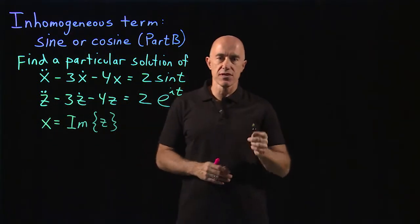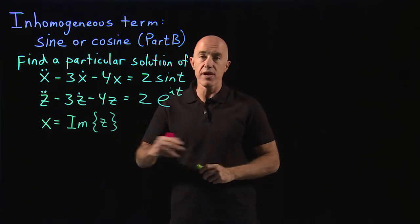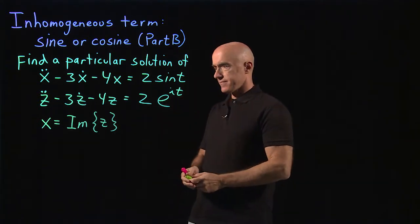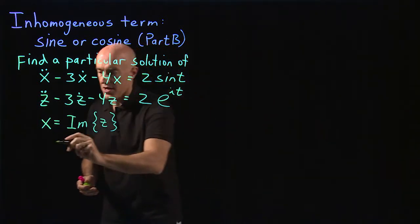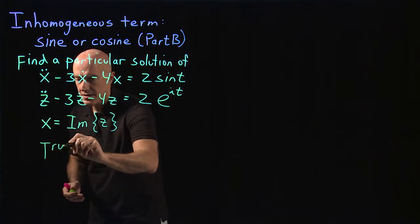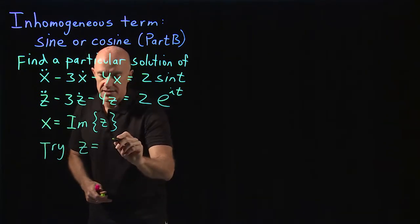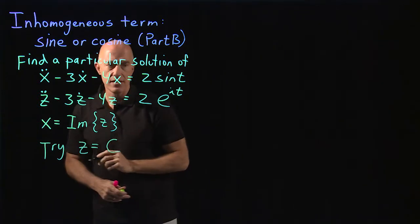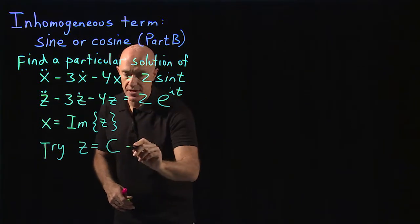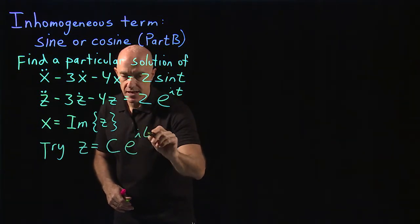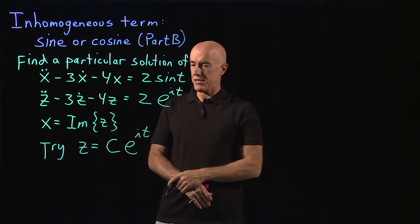If the right hand side was a cosine t, then we would be looking for the real part of z. Okay, so we try now our exponential ansatz. So we try z to find the particular solution as an unknown constant c, which here can be a complex number, times e to the it. We match the exponential function. Then we substitute into the differential equation.